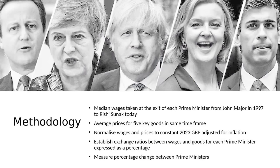My basic methodology was to take the median wages at the exit of each Prime Minister. So when John Major left in 1997, those figures are taken to be representative of the Major era. When Blair left in 2007, those figures are Blair's. When Brown leaves in 2010, those are Brown's, and so on. I think it's quite fair to judge a Prime Minister at the end of their term rather than the start. I will say, in the interests of fairness, Rishi Sunak is currently in the middle of his term, so he is at a slight disadvantage. We're also going to take average prices for five key goods in the same time frame.